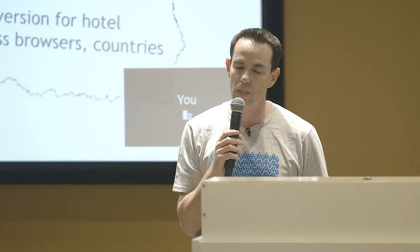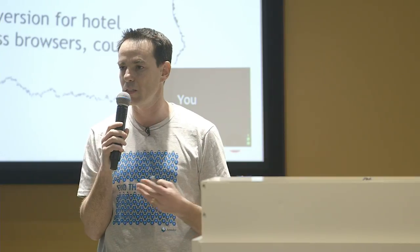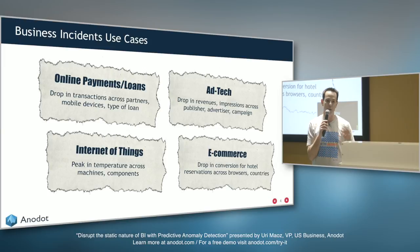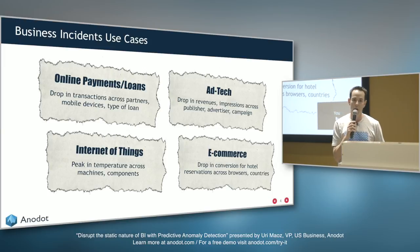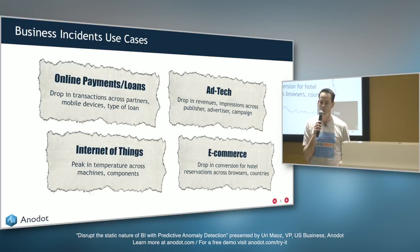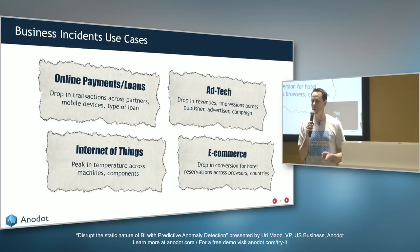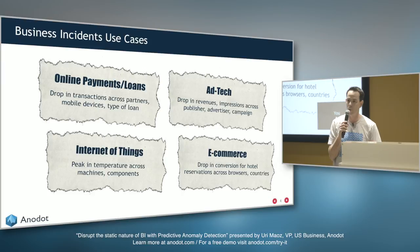Another example is the ad tech space, which has a lot of traction and interest in anomaly detection because of the massive amounts of data and granularity — impressions, clicks, CTR — distributed across different partners and campaigns. The key word is granularity: you want anomaly detection at every level — specific page, specific offer, specific product.